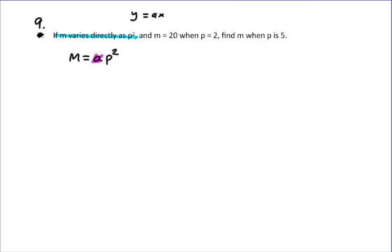So to work this guy out, we're told that M equals 20 when P equals 2. So we've got 20 equals A times 2 squared. And so when we do the math, we're going to have 20 equals 4A. And then when we do the math again, A is going to be equal to 5.